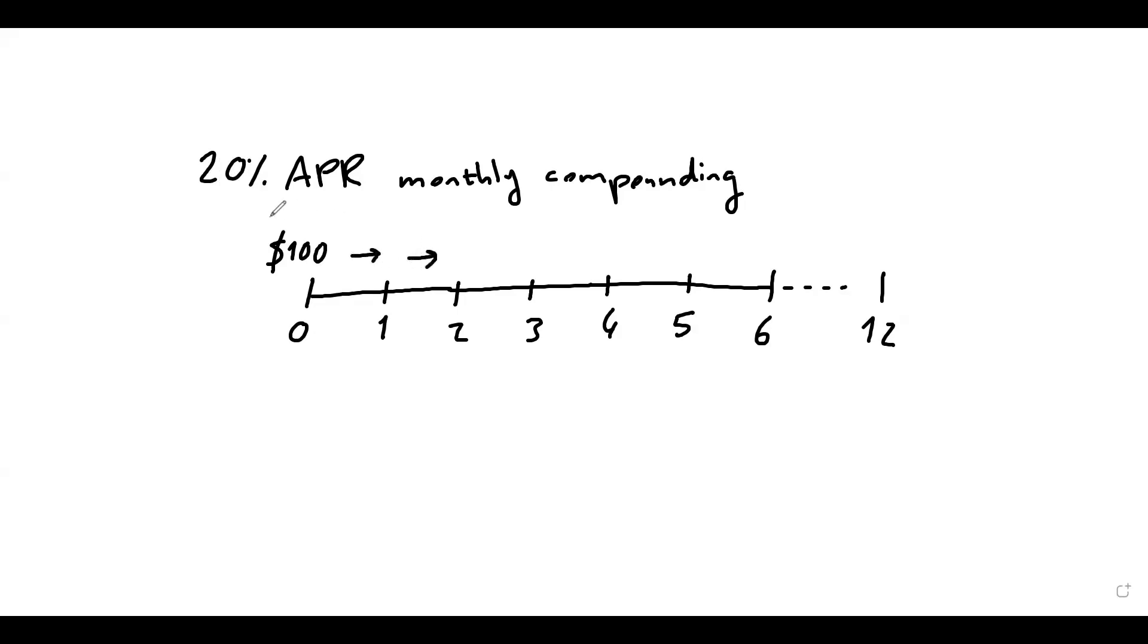And the next month, again, we will earn 20% divided by 12 on the balance over here. So which is again, we are earning interest on interest, and so on. So in this case, the EAR would be 1 plus 20% divided by 12 to the power 12 minus 1. And I've just done this calculation beforehand. So this should be 21.94%.